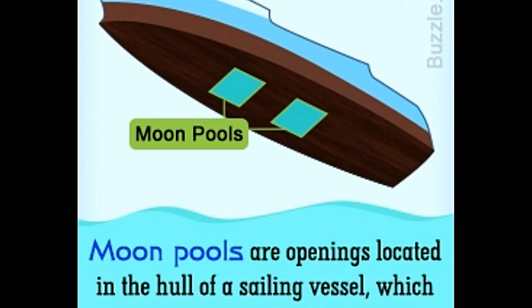How does a moon pool work? To understand the working of a moon pool, we need to examine its different types. There are mainly four types of moon pools, each with a unique working principle. Let's examine them one by one.